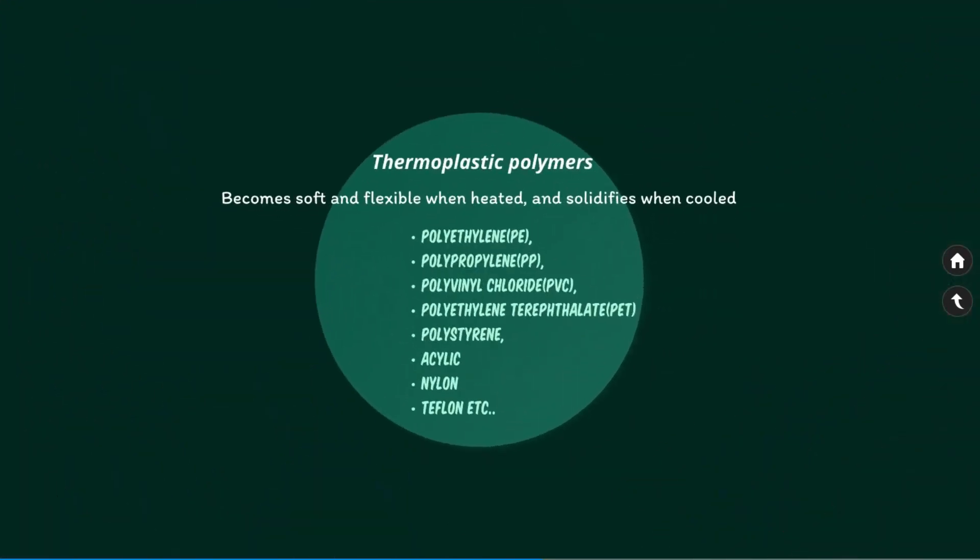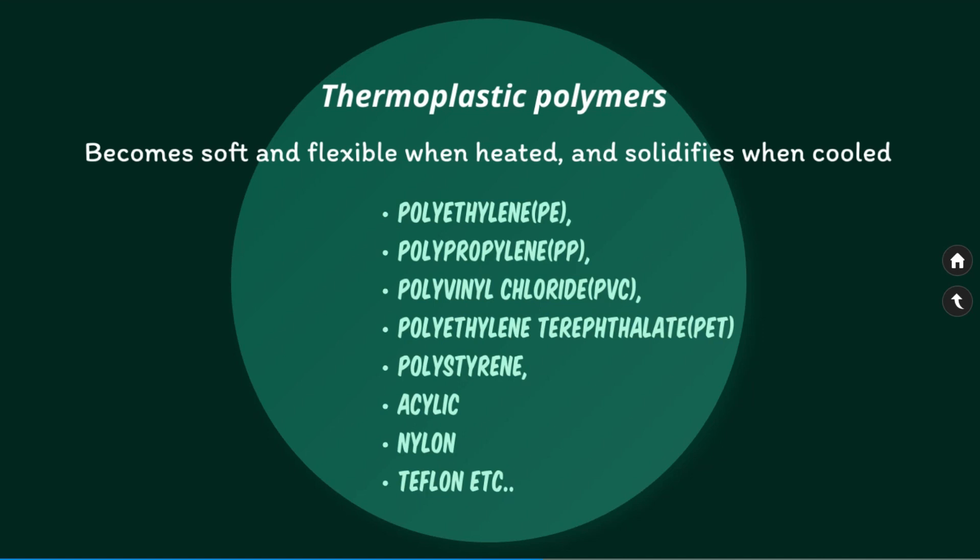If heat is applied to a thermoplastic, it will soften and melt; once it is cooled, it will return to solid form. Thermoplastics do not experience any chemical change through repeated heating and cooling, and therefore they are well suited for injection moulding. Common examples of thermoplastics include polyethylene, polypropylene, polyvinyl chloride, polystyrene, acrylic, nylon, and Teflon. At some temperature these materials become soft and flexible, and solidify when cooled.